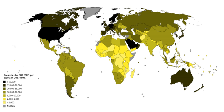For example, suppose a country's GDP in 1990 was $100 million and its GDP in 2000 was $300 million. Suppose also that inflation had halved the value of its currency over that period. To meaningfully compare its GDP in 2000 to its GDP in 1990, we could multiply the GDP in 2000 by one-half, to make it relative to 1990 as a base year. The result would be that the GDP in 2000 equals $150 million in 1990 monetary terms. We would see that the country's GDP had realistically increased 50%, not 200%, as it might appear from the raw GDP data.